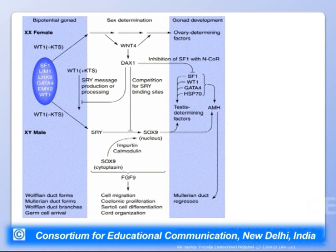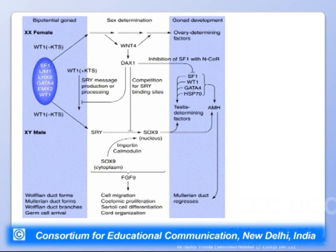In bi-potential gonads, transcription factors SF1, WT1, and GATA4 are present. In males, the SRY gene product — a DNA-binding protein — enters the nucleus and binds to downstream target genes, particularly SOX9. SOX9, influenced by FGF9, causes cell migration, coelomic proliferation, Sertoli cell differentiation, and cord organization. In the presence of importin and calmodulin, SOX9 moves from the cytoplasm to the nucleus, where SRY acts on SOX9 genes.